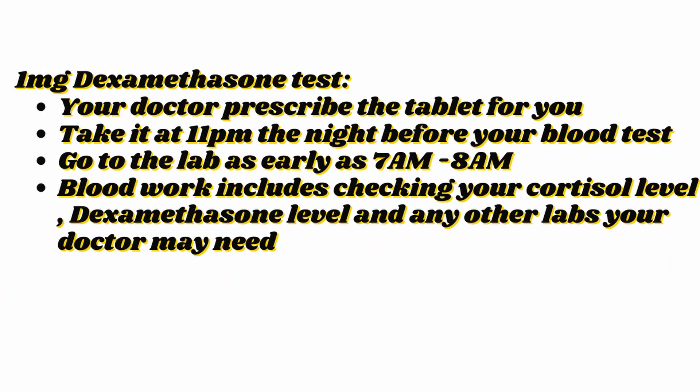How do you do the dexamethasone test? It's very simple. We prescribe a one-milligram dexamethasone pill for you. You take it at around 11 PM the night before your blood work. Then, very early in the morning between 7 and 8 AM, you go to the lab. They draw your blood to check your cortisol level and also to check your dexamethasone level.